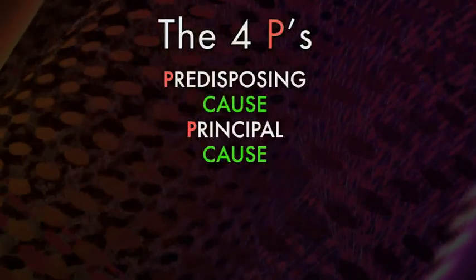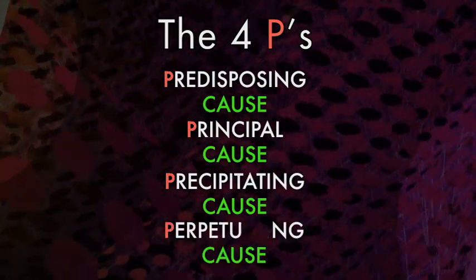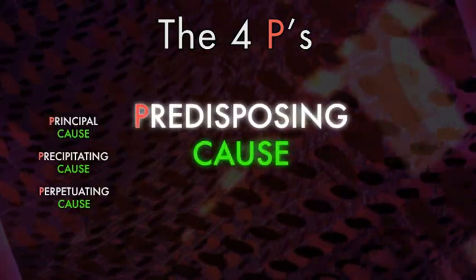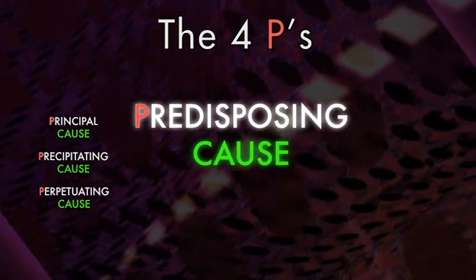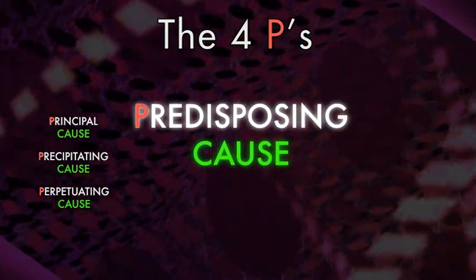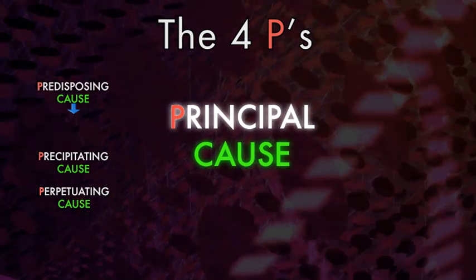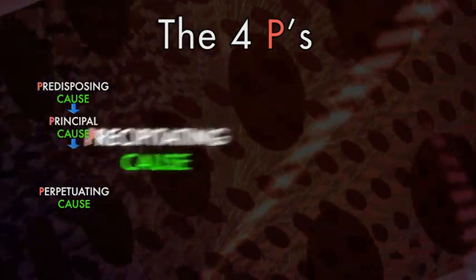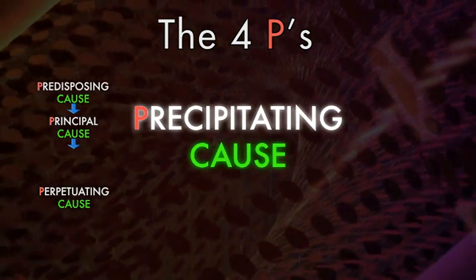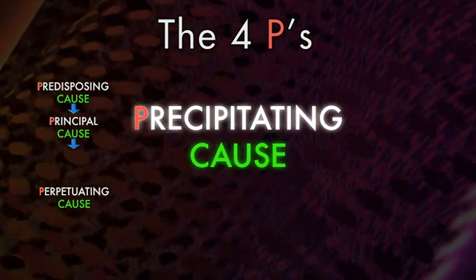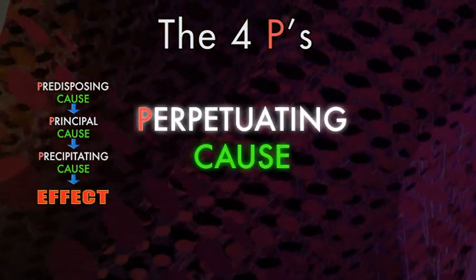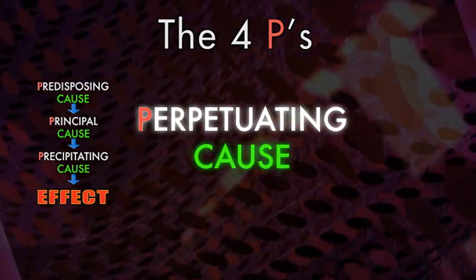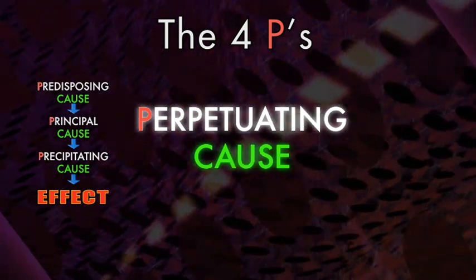One advanced form of causal analysis uses something we'll call the Four P's. A predisposing cause is something that brings out susceptibility. A principal cause is a major factor essential to bringing about an effect. A precipitating cause is something that triggers an effect. A perpetuating cause comes after an effect, reinforcing the event.